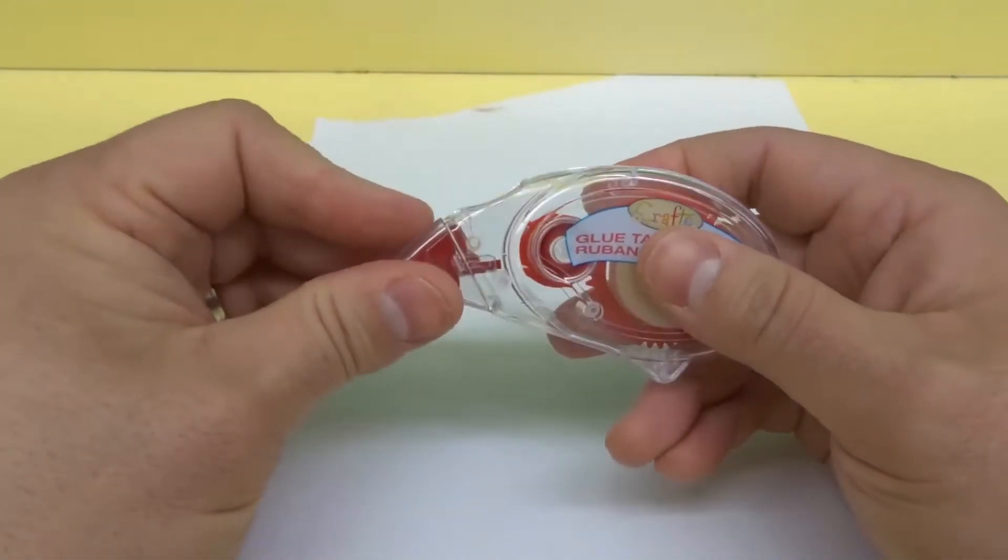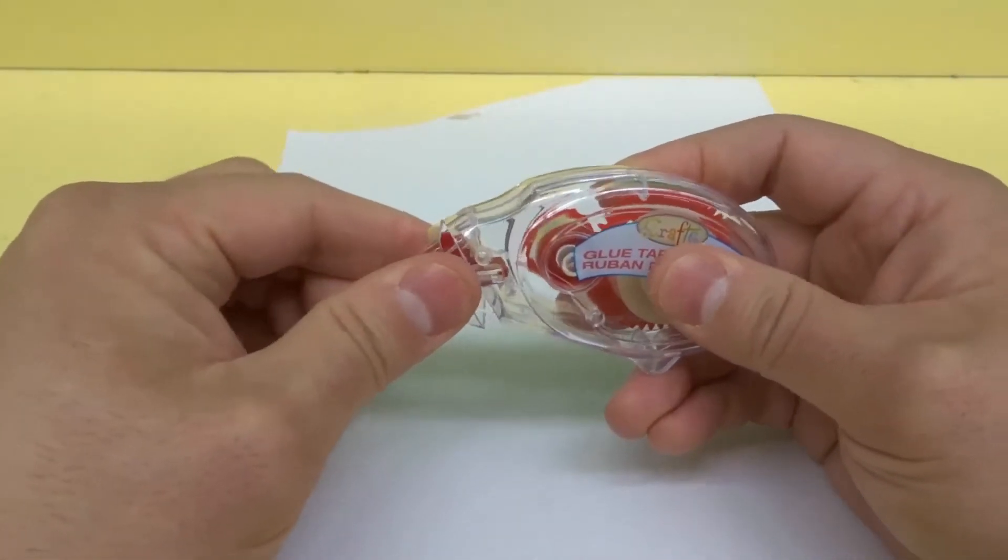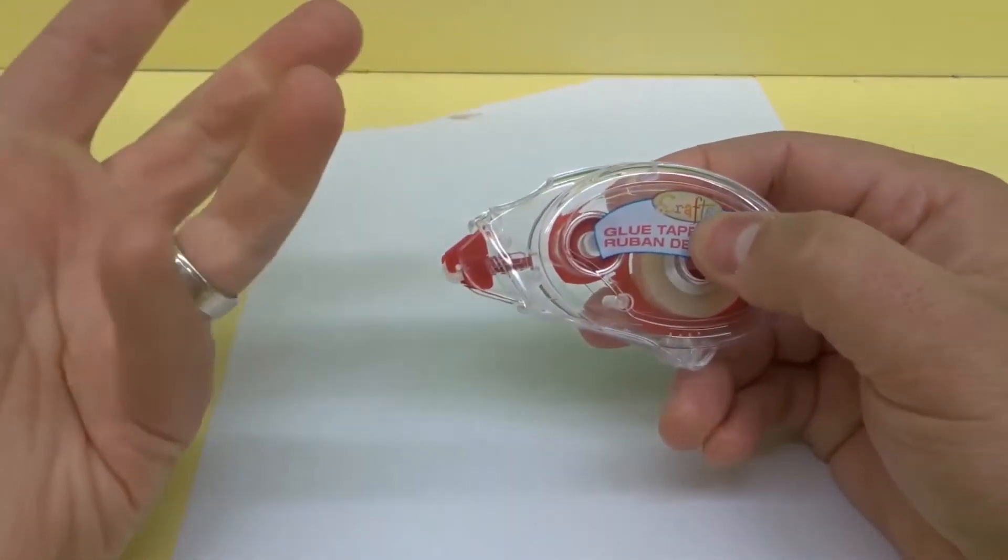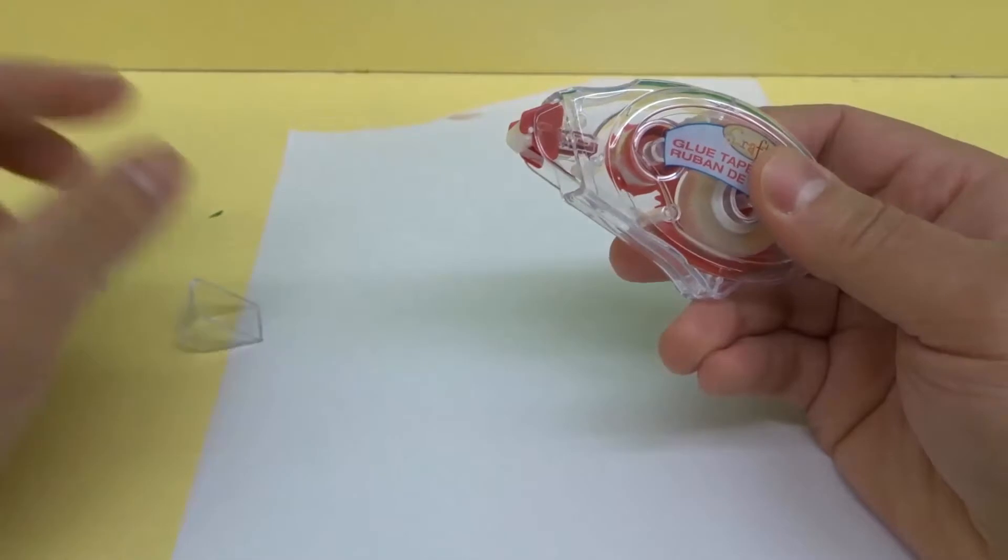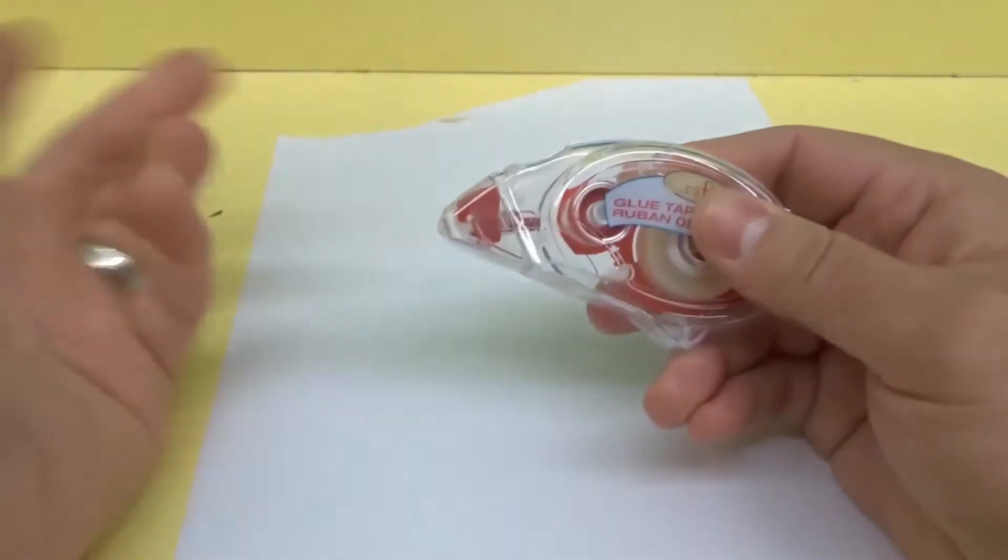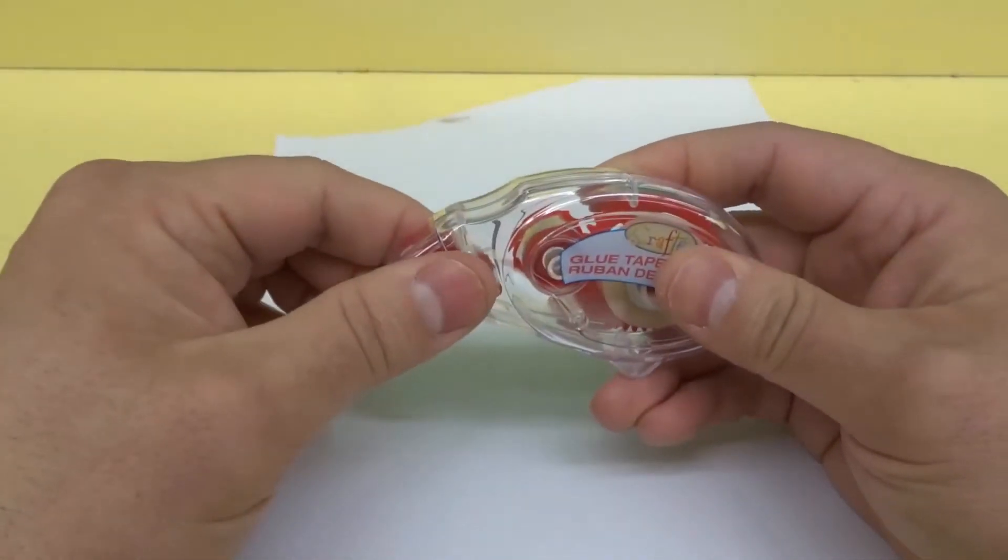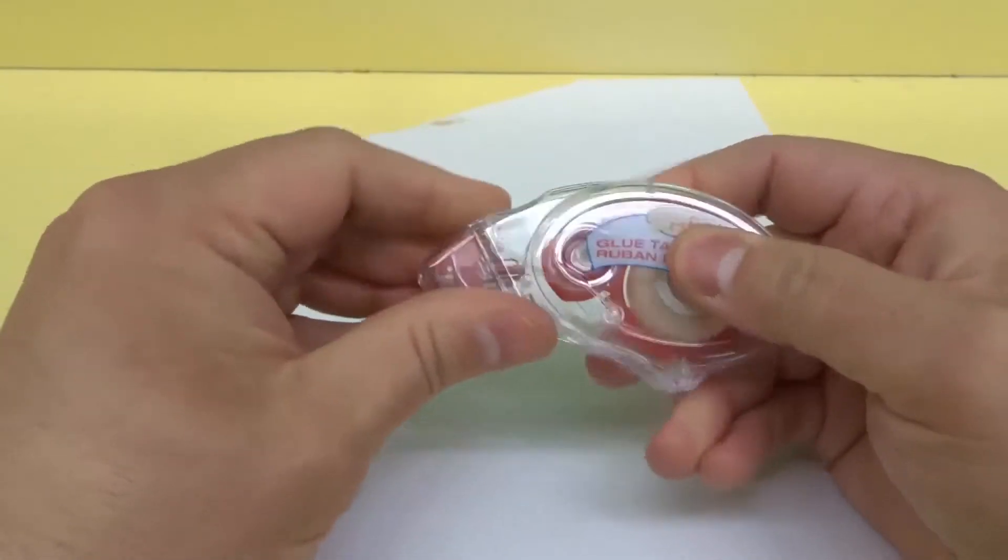So the first step is I remove the lid. Now oftentimes, these different variations of this glue tape will have a lid because they don't want it sticking to anything that you don't want it to stick to. So you have a lid that you remove to expose the adhesive part.